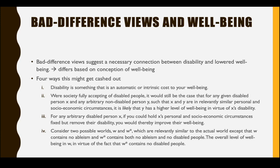What she's done in this section is describe four different ways you might hold a bad difference view. For most of them she's given some reason to think they might not be the best way of cashing out a theory of disability. However, she hasn't given a full argument against any of them individually — she's given us a foundation upon which to build our own view. In the next chapter, she goes on to explain why she thinks these ultimately fail, but if you find yourself with a bad difference view, she thinks you ought to be able to identify with one of these different ways of cashing that out.